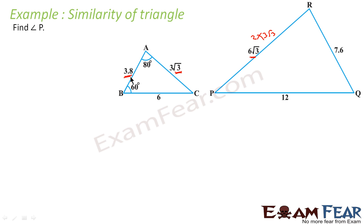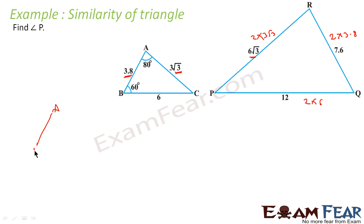That means AC and PR are proportional, AB and RQ are proportional, and BC (6) and PQ are proportional. To prove they are similar and find the exact correspondence, take AB (3.8) and find its proportional side, which is 7.6. This side is either RQ or QR — two options.